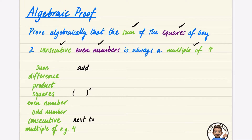Instead of asking about the sum, questions might ask about the difference, which is found by subtracting. You may also remember from primary school that product is the result of two things being multiplied together.